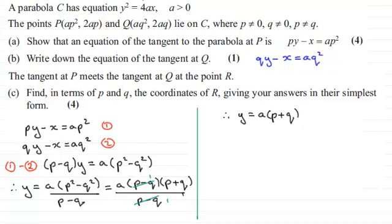Now we need to get x, and we can do that easily by substituting this result into any one of our equations. I'm going to use equation one. We get p times y, so that's p times a times (p plus q), and then minus x equals ap squared.